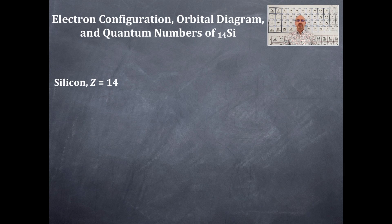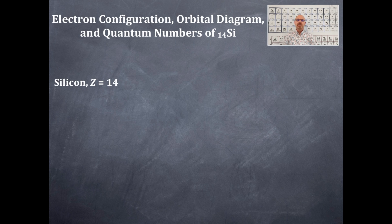We're going to do silicon. Silicon has a Z of 14 — that is, the atomic number is 14, which identifies which element it is. There are no other elements that have an atomic number of 14. It's also the same as the number of protons, which are 14.